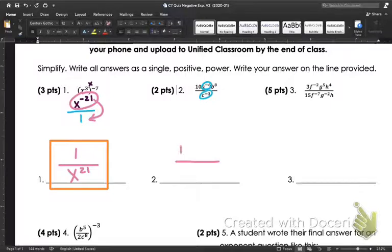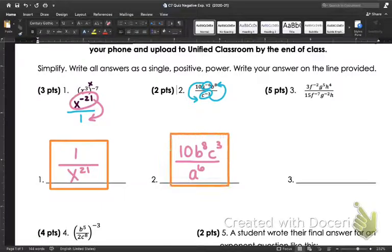For my final answer, first I want to write what isn't moving. The 10 is staying, the b to the 8th is staying. However, that a to the negative 6 is going to move to the denominator and become a to the positive 6. The c to the negative 3rd in the denominator is going to move to the numerator and become c to the positive 3rd. This is now my final answer.